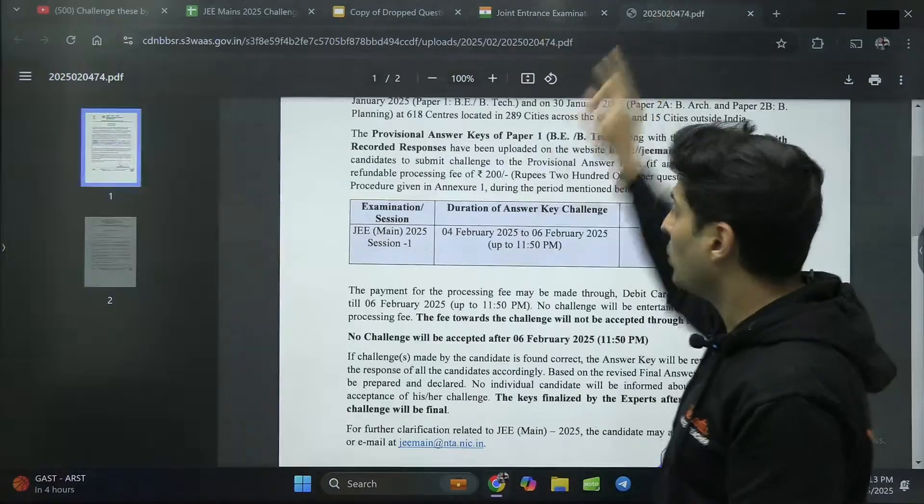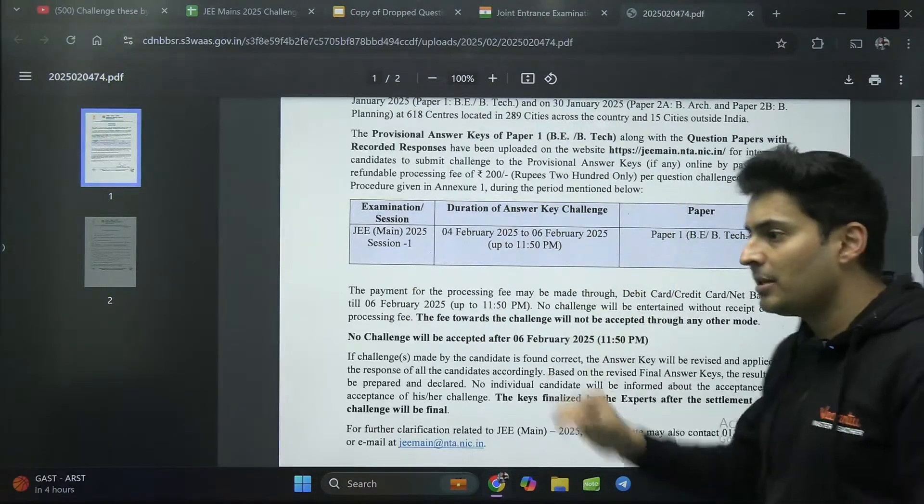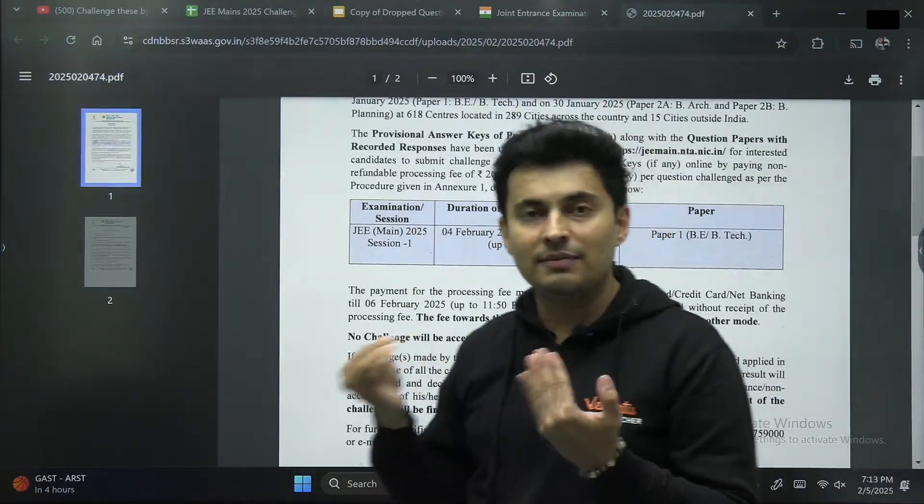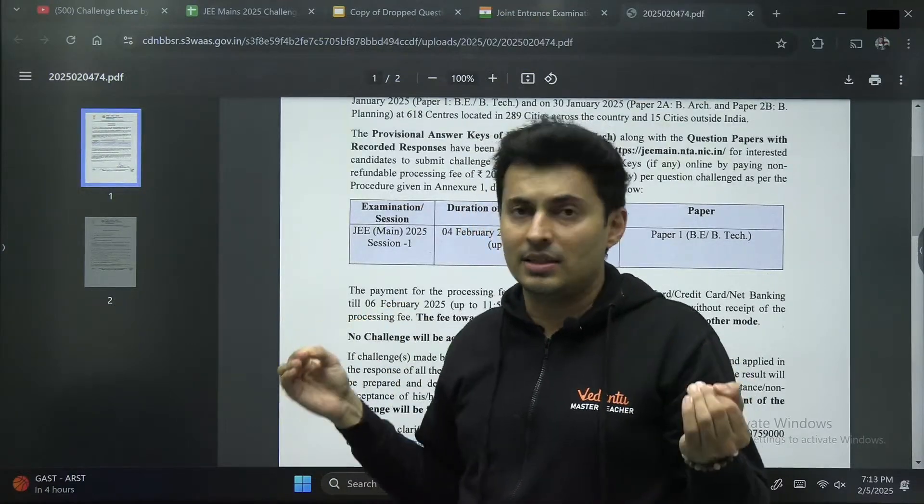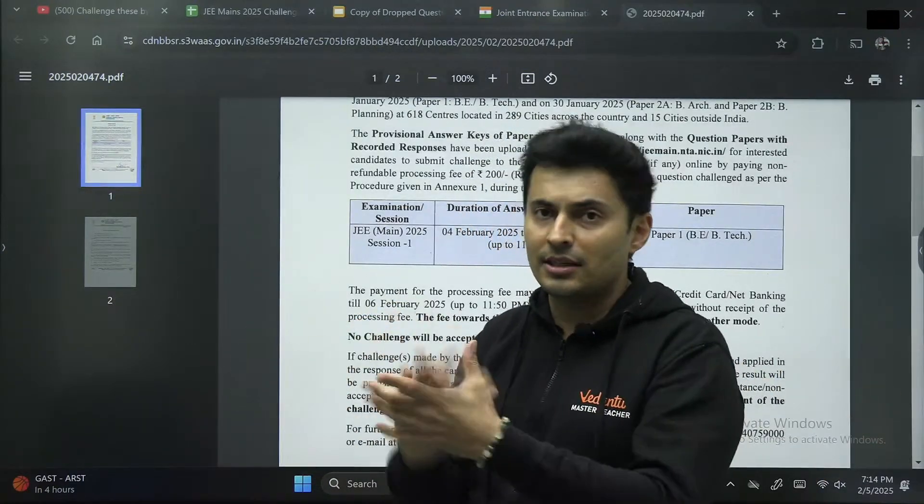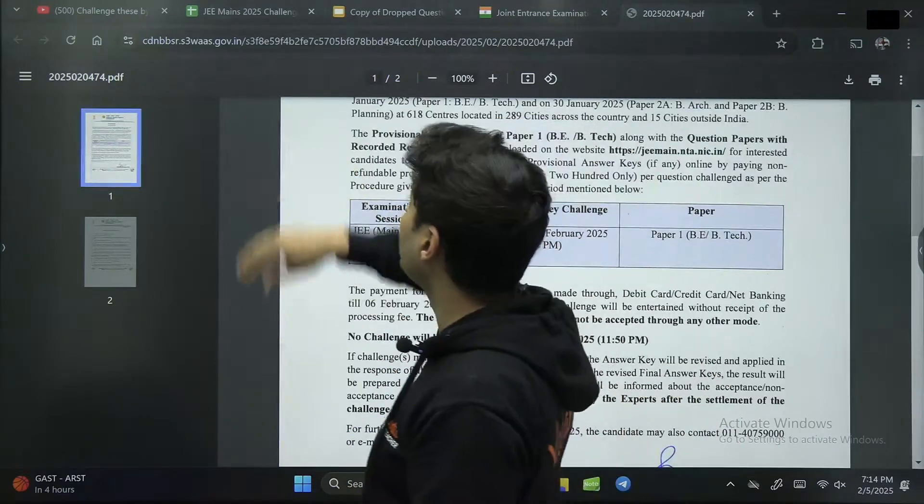So you only have time till 6th February night to challenge the provisional key because the final key once made, then it will be a big, big task. They generally do not change the key except for the last time where they goofed up even in the final key.